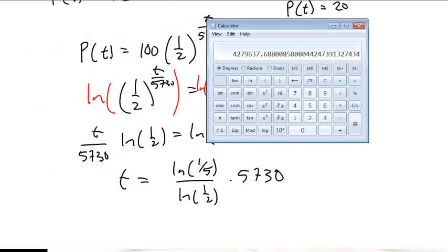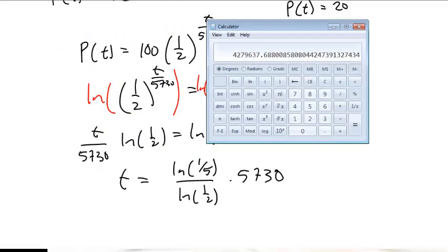If we calculate this, ln(0.2) / ln(0.5) times 5,730 gives us 13,304 years.